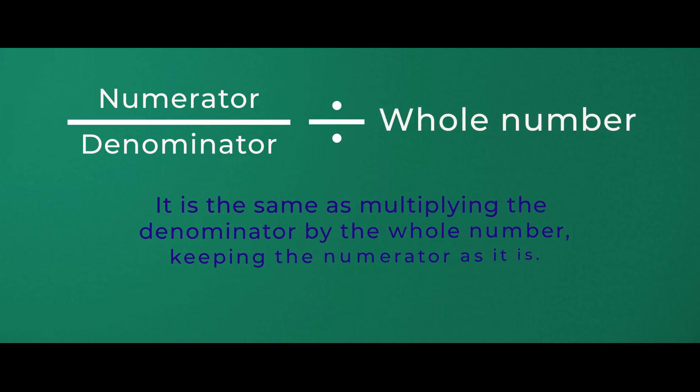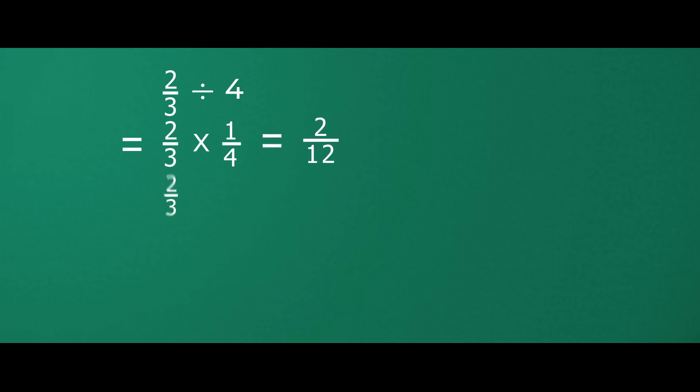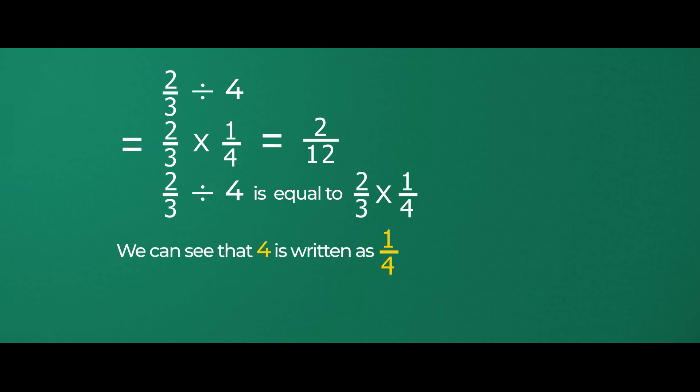When a fraction is divided by a whole number, it is the same as multiplying the denominator by the whole number, keeping the numerator as it is. Two-thirds divided by four is shown as two-thirds times one-fourth, which equals two-twelfths. We can see four written as one-fourth — in other words, we are using the reciprocal.